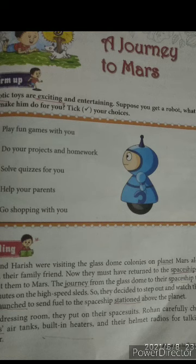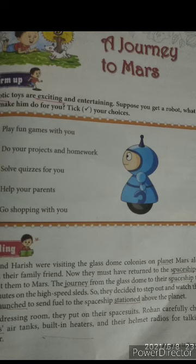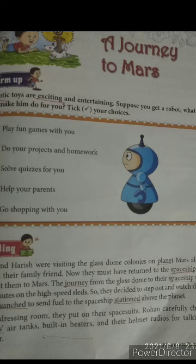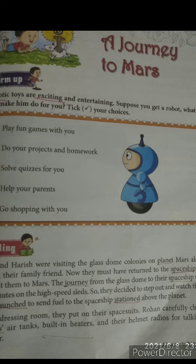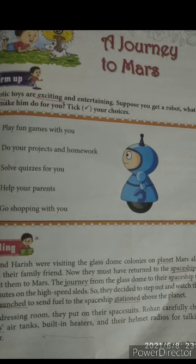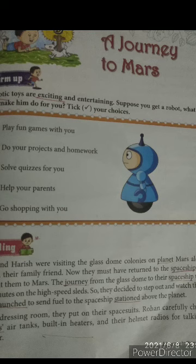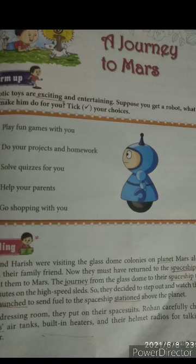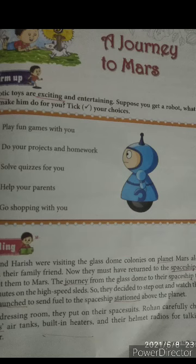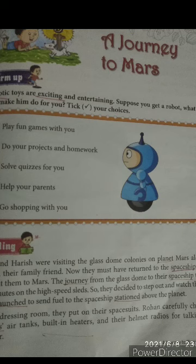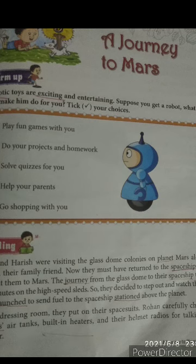You know that Mars is a planet. You know the solar system also — in Class 3 SST you learned that there are eight planets altogether: Mercury, Venus, Earth, Mars. Mars is the fourth one, after Earth, which means it is one of the nearest planets to Earth.